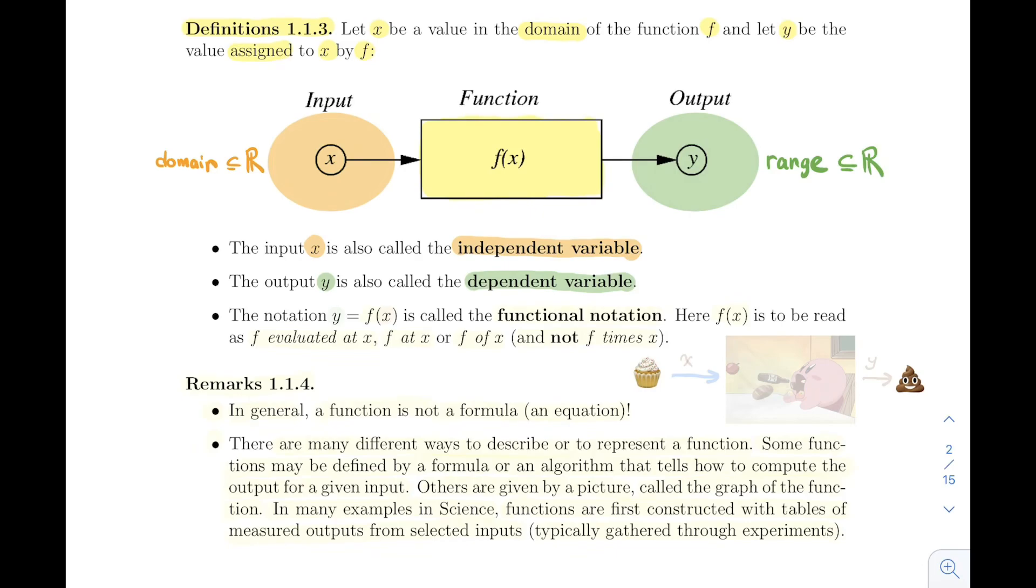Typically we'll be using the functional notation to represent this transformation. If you see f(x) - an x in a bracket next to an f - then you know that x is coming inside f. If you see it's equal to y, then you know that the output is y. So that's the functional notation. Here, f(x) should be read either as f evaluated at x, f at x, or f of x. But it's not f multiplied by x or f times x. Make sure you see the distinction.